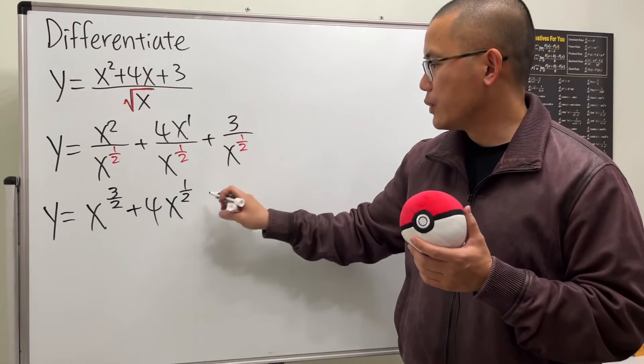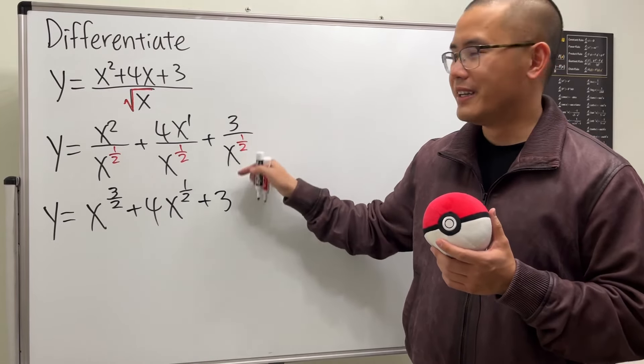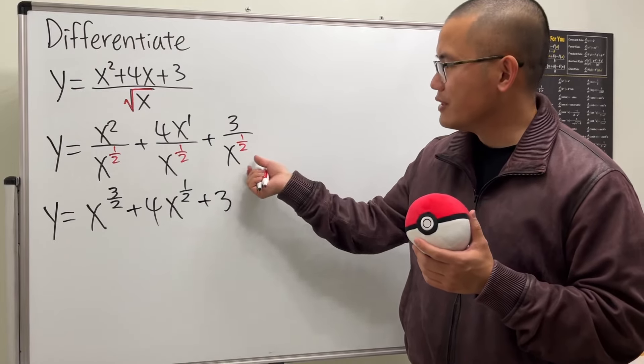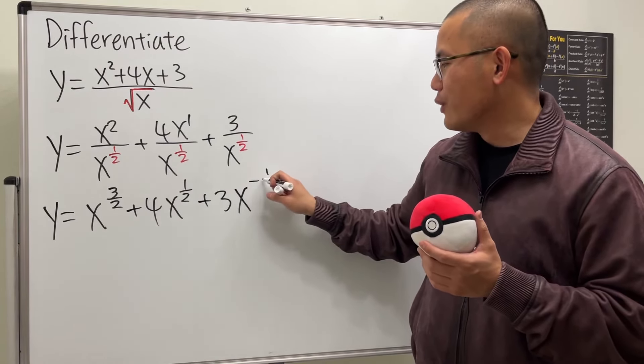Lastly, we have the 3. So we add a 3. And then we have no x here. So we just have x to the 1 half on the bottom. We will just bring this up, which will give us x to the negative 1 half power.